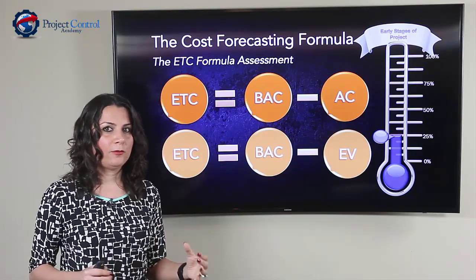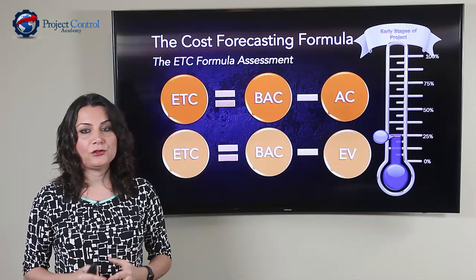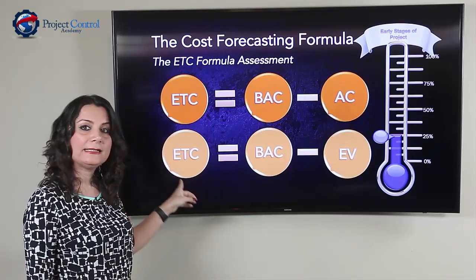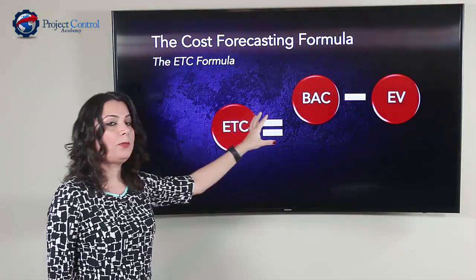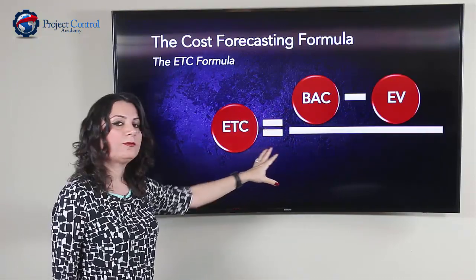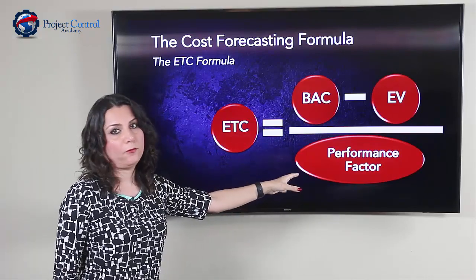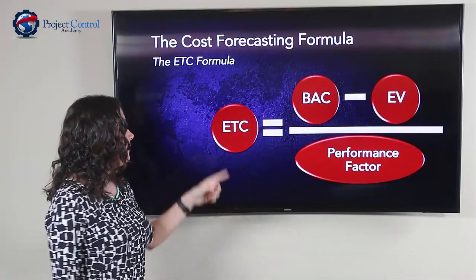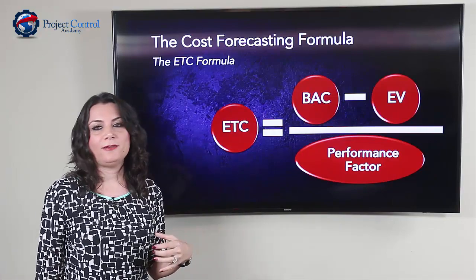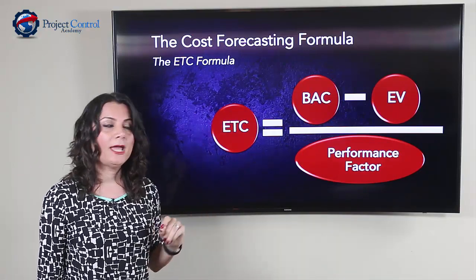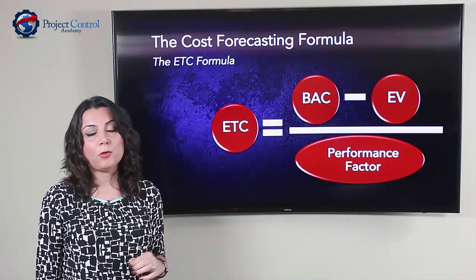If my project performance is bad, do I need more money to finish the job? Yes — I need more money. So to come up with an accurate ETC forecast, I need to factor in my performance. The right formula for Estimate to Complete is not only BAC minus EV (the true remaining work), but also factored by the performance factor. If performance is good — say the performance factor is over one — ETC is less. If performance is poor and less than one, ETC goes up.